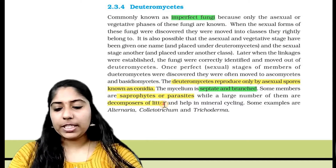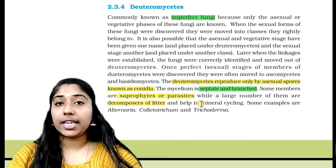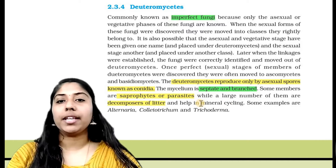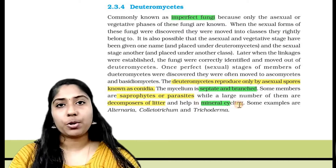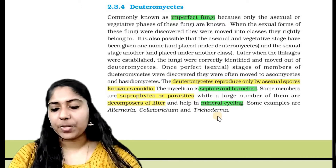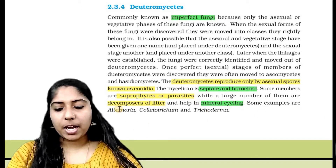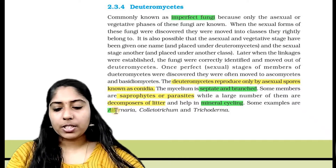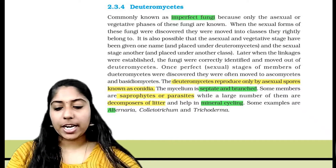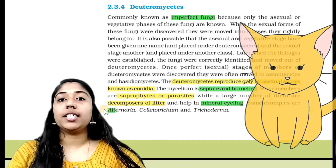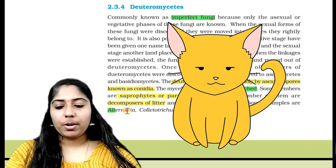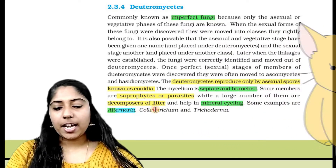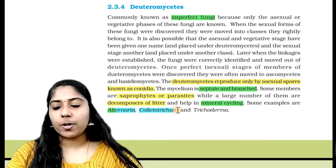Deuteromycetes help in mineral recycling. Some examples are Alternaria, Colletotrichum, and Trichoderma.